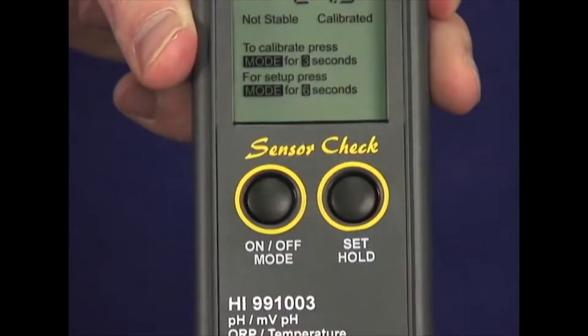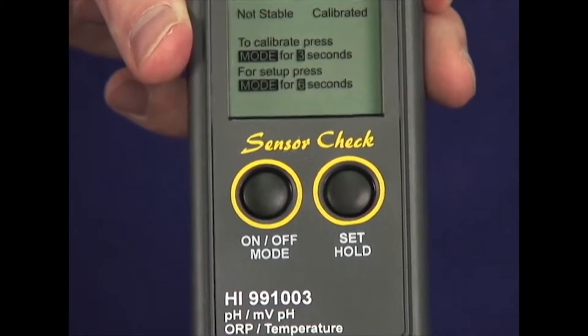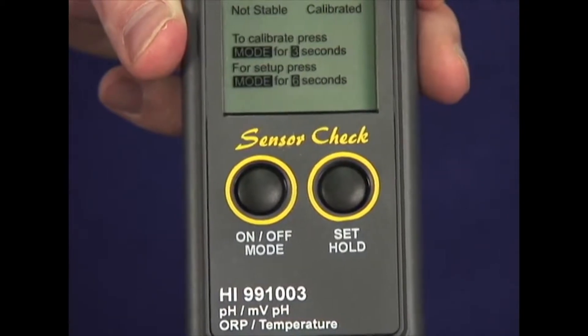The meter comes with two buttons and a unique sensor check feature that allows you to determine your electrode status at any time.